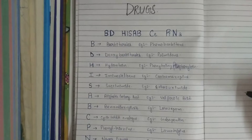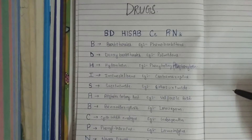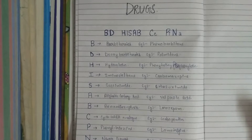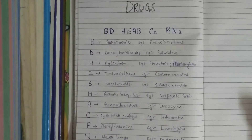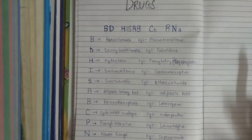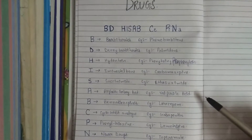S stands for succinimide, for example, ethosuximide. A stands for aliphatic carboxylic acid, for example, valproic acid.